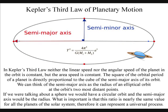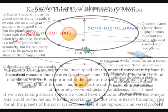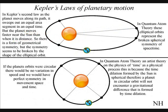If the planets of our solar system had circular orbits, there would be no variation in speed, and we would have perfect symmetry in movement, space, and time, with angular momentum remaining the same.